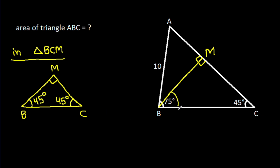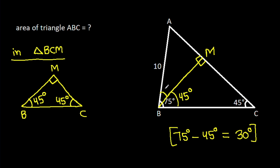This angle is 45 degrees, so this angle will be 75 degrees minus 45 degrees, that will be 30 degrees. It is 30 degrees, and these two angles are equal, which means BM will be equal to CM.